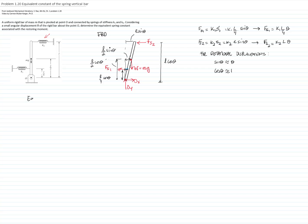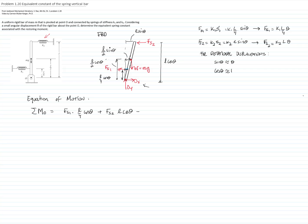Now we do the equations of motion, and we will take moments at point O. We take moments at O because we are not interested in finding the reactions of the pin. The moment created by all external forces equals the kinetic moment. So we have the force of spring 1 times the distance L/4 cosine of theta, creating a positive moment, plus the positive moment from spring 2 times L cosine of theta, minus the moment created by the weight, which is (L/2) sine of theta times Mg. All that equals negative the mass moment of inertia of the bar about O times theta double-dot. The mass moment of inertia of a bar about one end is (1/3)·M·L².